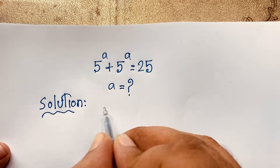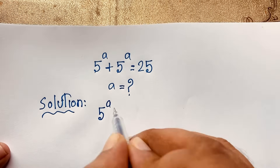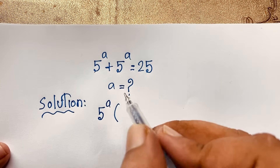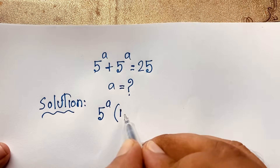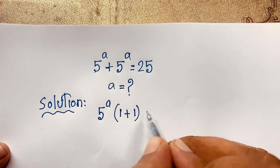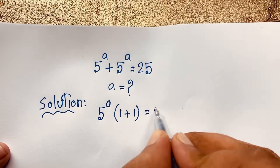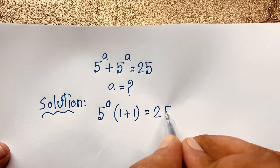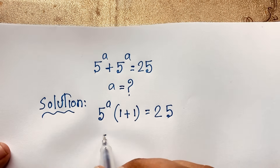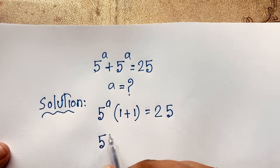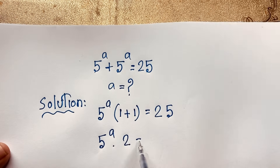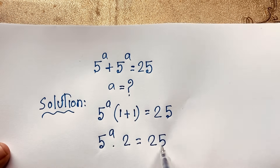Here, 5 to the power a is common, so if I take 5 to the power a as a common factor, dividing each term gives 1 plus 1, which equals 2. So we get 5 to the power a times 2 is equal to 25.